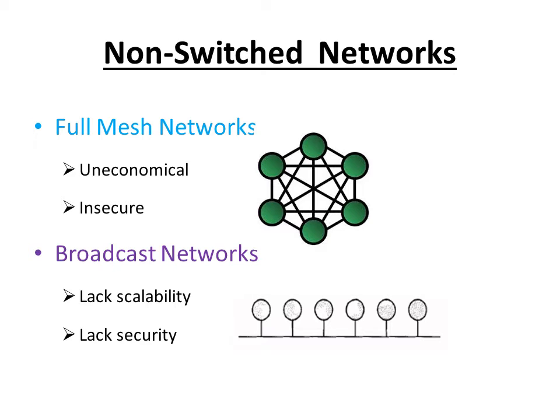Non-switched networks employ two types: full mesh networks and broadcast networks. As you can see, in full mesh networks each terminal is connected directly to every other terminal present in its zone. Although this kind of network doesn't allow any interruption of service since another path can be used when a link is broken, it involves a lot of cabling and tends to be uneconomical and insecure, as accessing a node is easy by all other terminals.